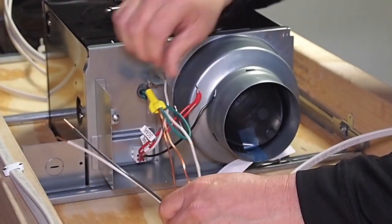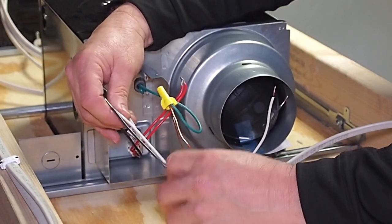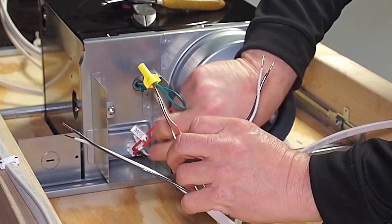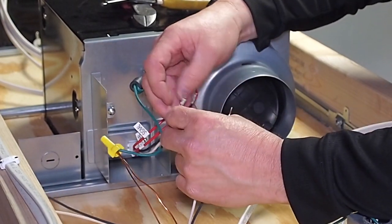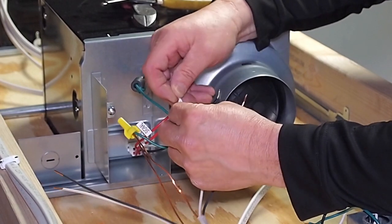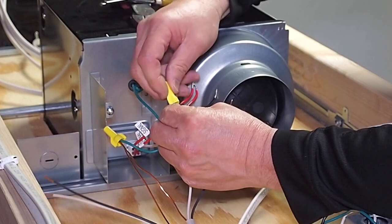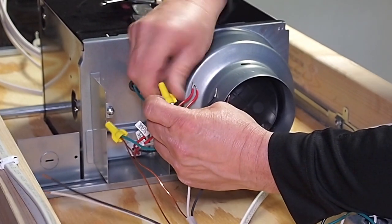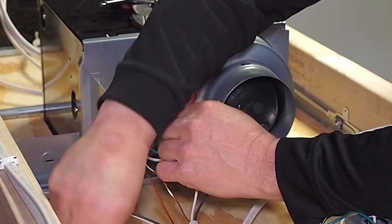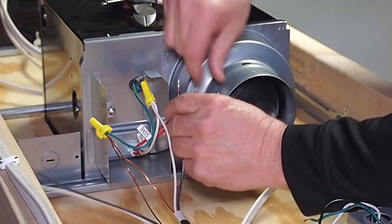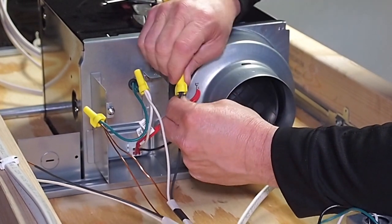The first thing we will do is get our grounds hooked up here to the fan. The next thing we are going to do is hook into the common and neutral. Again, this is the old wire that we took off the fan that we are now using to feed constant power up here from the switch box. Hook that neutral up first, now we will hook our common up.